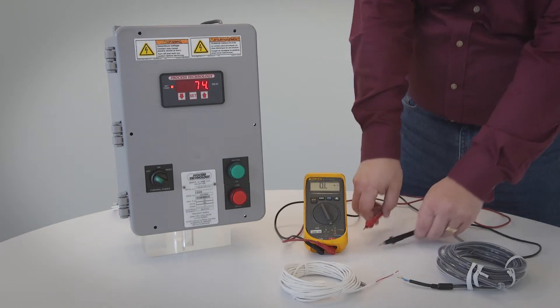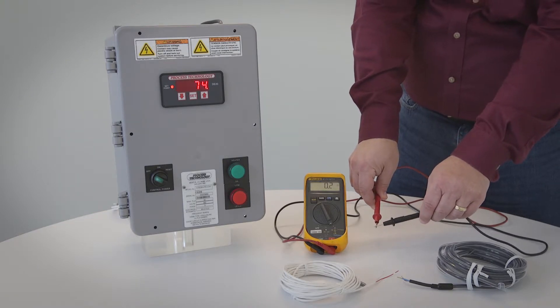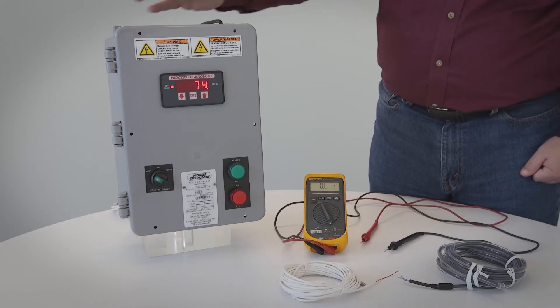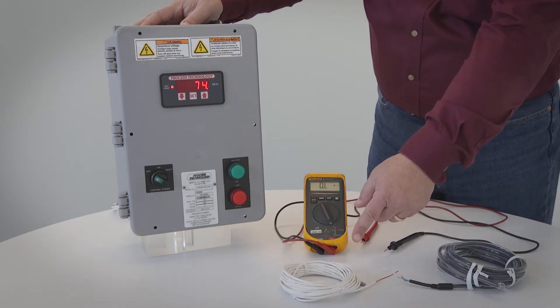To test the sensor, first you need to turn off power and open the control box. The temperature sensor is usually the white twisted cable that comes out of the control box and goes into the process liquid.